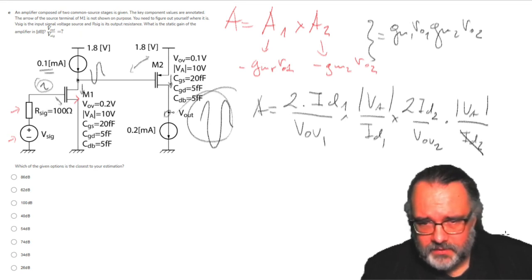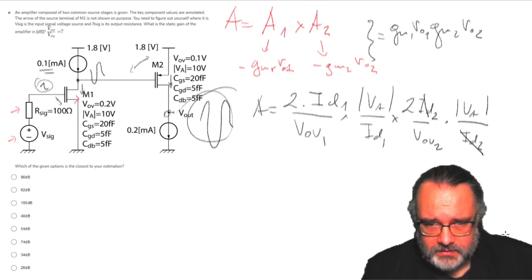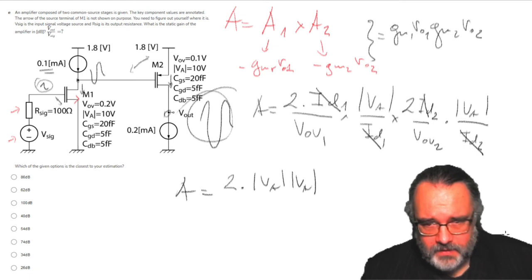Now this will cancel, this is easy. So this will cancel out and then we have to calculate this. So two times VA times VA, actually four times, wait a second, four times, divided by V-overdrive1 V-overdrive2. So what is this?